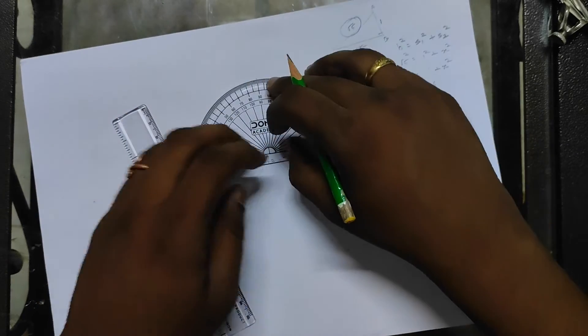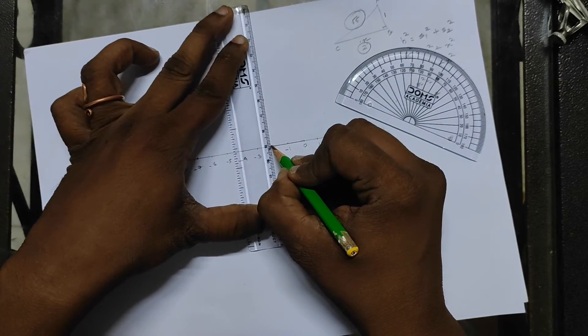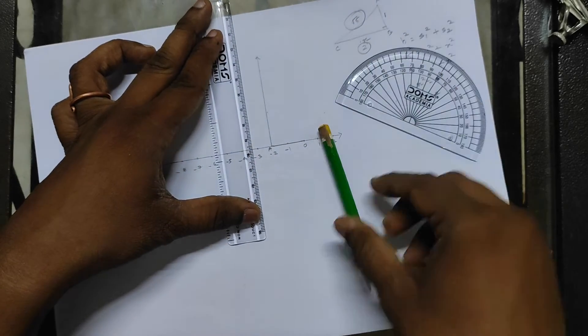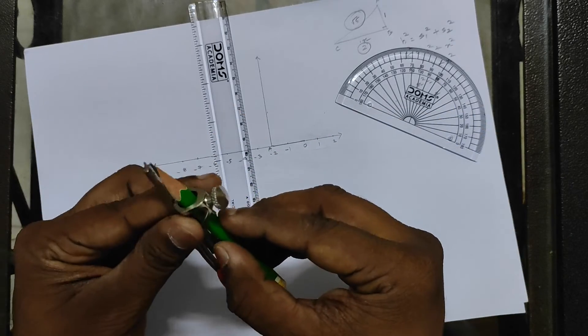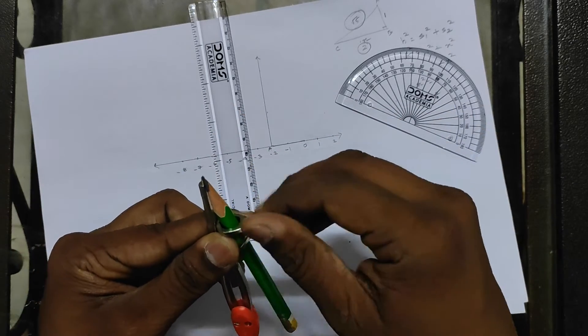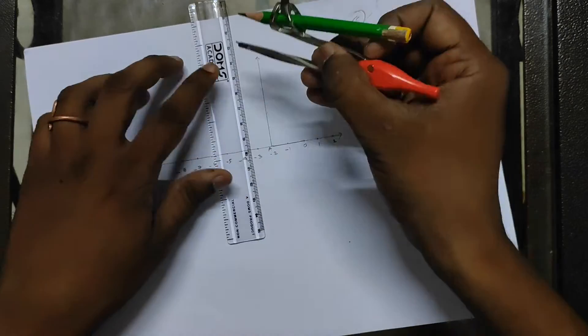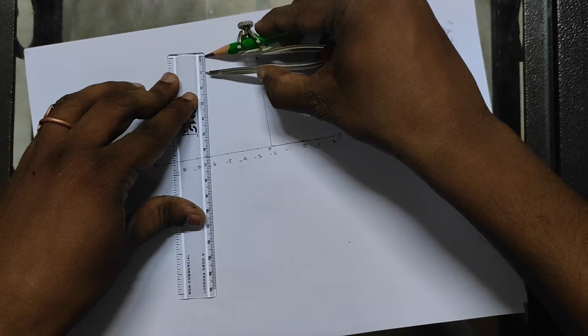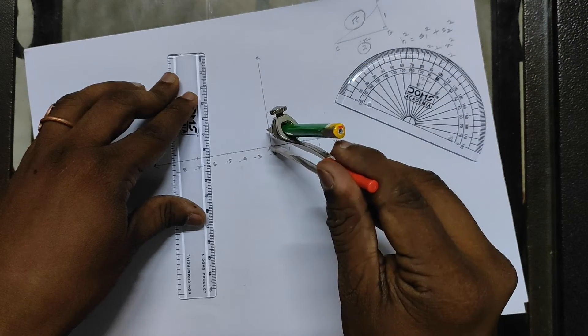Then just like in the previous question, we are going to make a 90 degree, now on the left hand side instead of on the right hand side. Then let's make a line. Okay, then we are going to take one centimeter radius, so let's take that. So one centimeter.